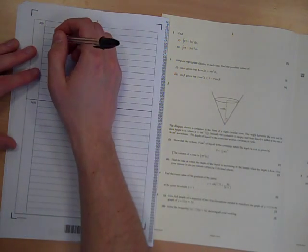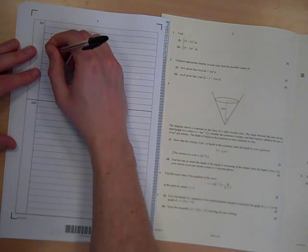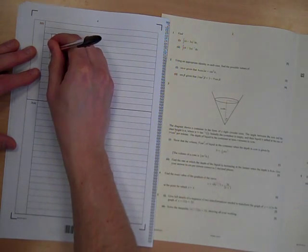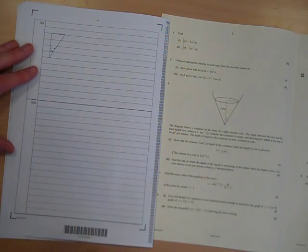as this goes down, this triangle is always... This angle is always going to be alpha, isn't it? That angle there will remain at alpha.